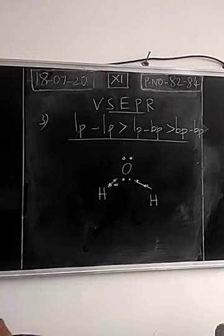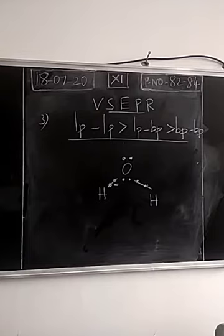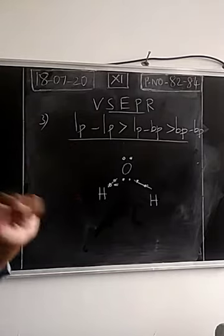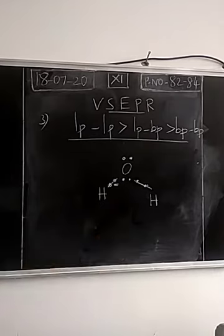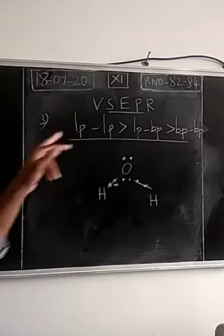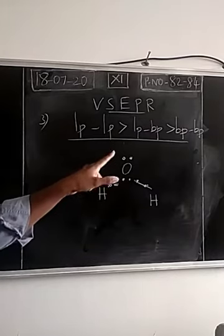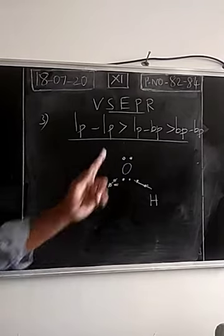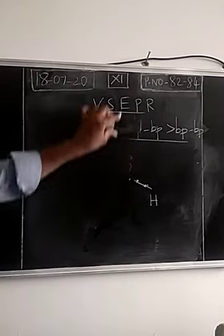There are three major features of VSEPR theory. First point: electron pairs of the valence shell are involved in chemical bonding — around atoms in a covalently bonded molecule there will be electron pairs. Second point: electron pairs may be present in the form of lone pair or bond pair. Third point: since all electrons have the same charge they will involve in repulsion. The order of repulsion is lone pair–lone pair > lone pair–bond pair > bond pair–bond pair. The reason for greater lone pair–lone pair repulsion is that they occupy more space and are attracted only by the nucleus of a single atom.